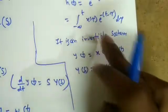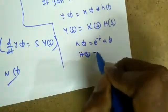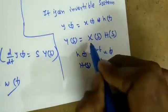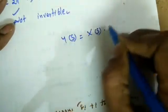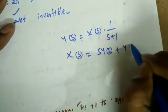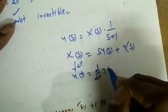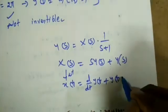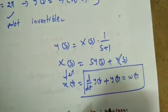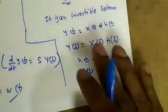We know h(t) = e^{-t}·u(t), so H(s) = 1/(s+1). Therefore Y(s) = X(s)·[1/(s+1)], which gives X(s) = (s+1)·Y(s) = s·Y(s) + Y(s). Taking the inverse Laplace transform: x(t) = d/dt[y(t)] + y(t). So the inverse system is w(t) = d/dt[y(t)] + y(t). Using Laplace transform made it very easy to find the inverse; in the time domain it would be very difficult.